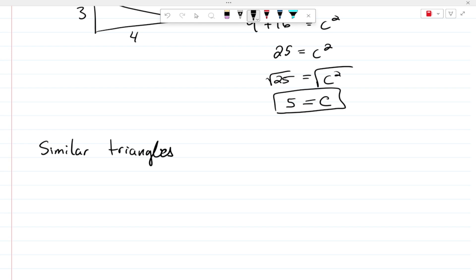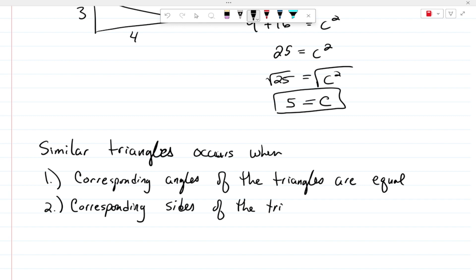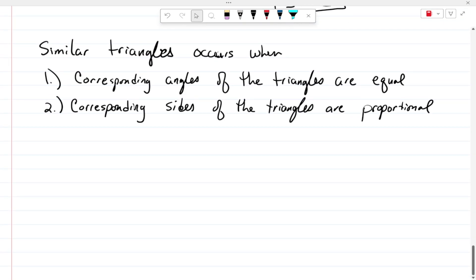So similar triangles occur when, first thing, the corresponding angles of the triangles are equal, and the corresponding sides of the triangles are proportional. There's a very famous problem that hopefully we've all seen before, and that problem deals with this.